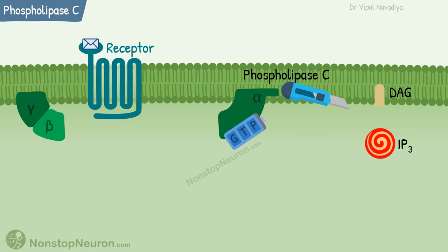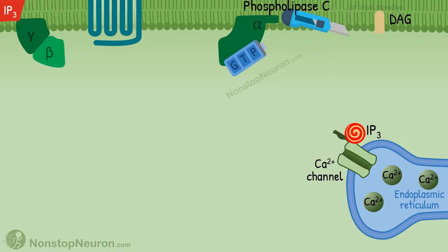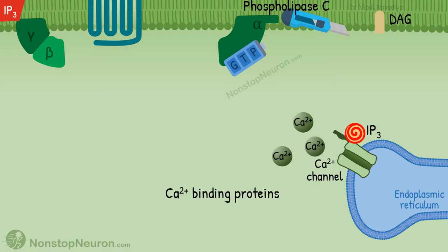IP3 is water-soluble, so it travels through the cytosol and binds to IP3 receptors on the endoplasmic reticulum. This receptor is a ligand-gated calcium channel. The endoplasmic reticulum stores calcium, and the binding of IP3 to this calcium channel causes opening of the channel and release of calcium into the cytosol.